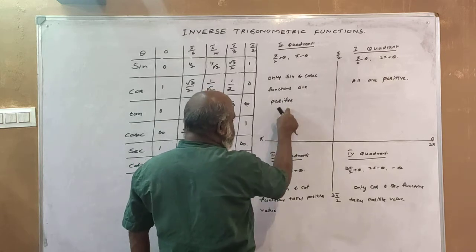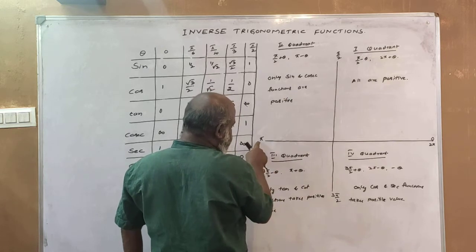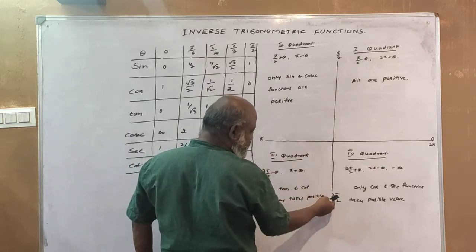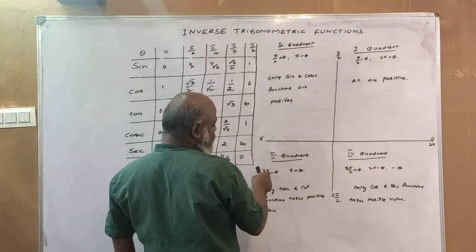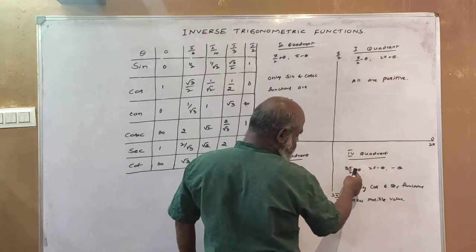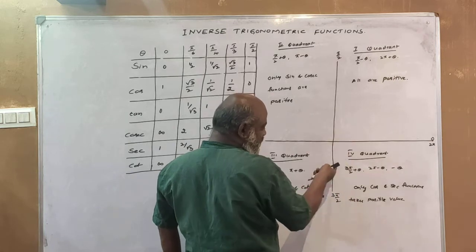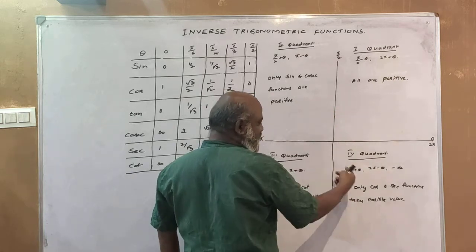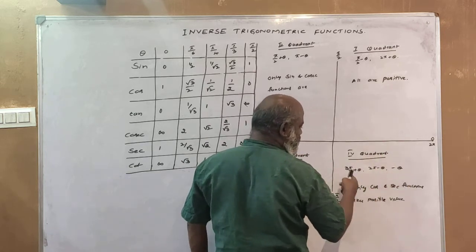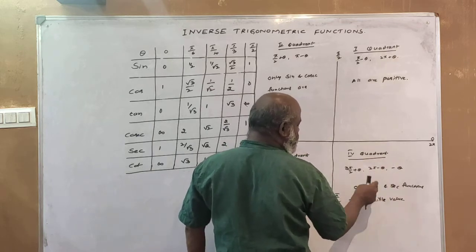The second term is π minus θ, and this quadrant is given. So π is equal to π plus θ. We also have 3π minus θ and 2π minus θ. Here, 3π minus θ plus θ equals 2π minus θ, which is equal to θ. This is the θ, and the iteration gives minus θ. Minus θ falls in the fourth quadrant.